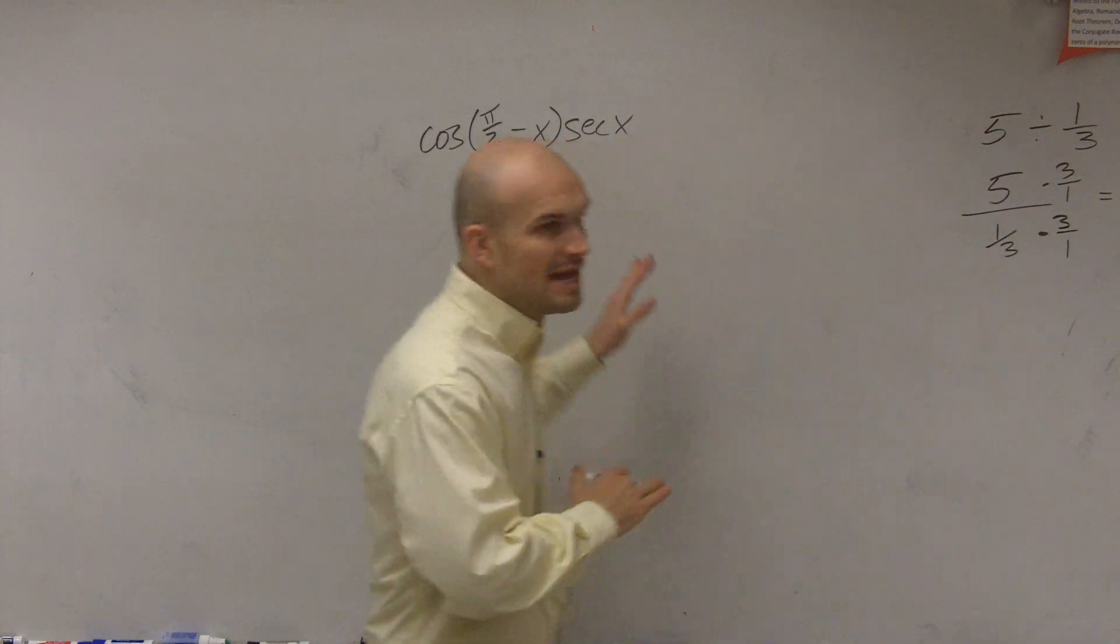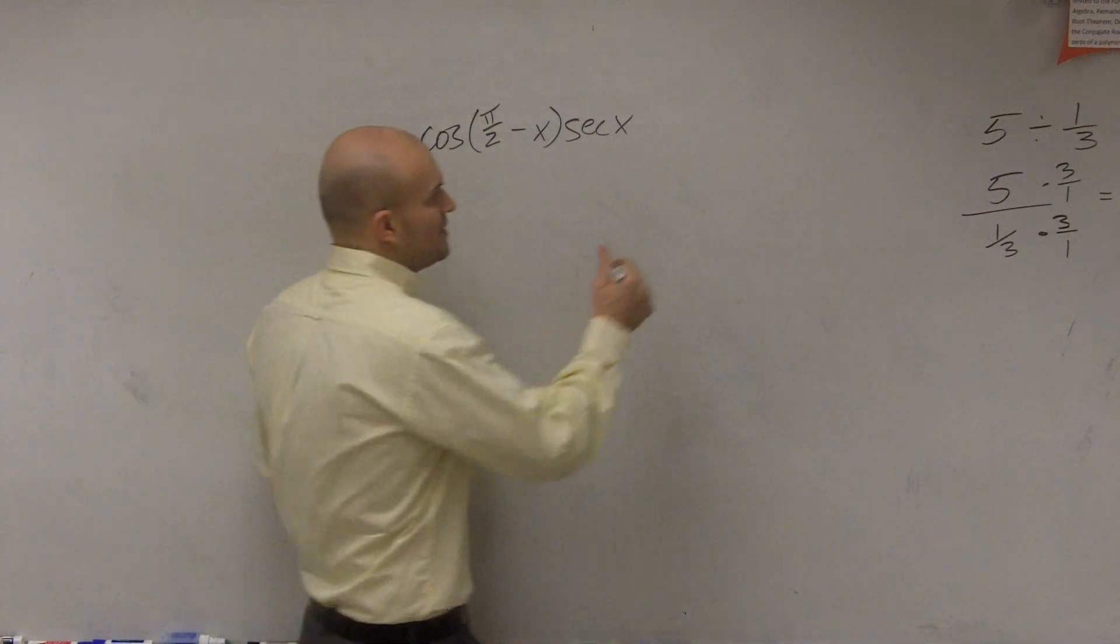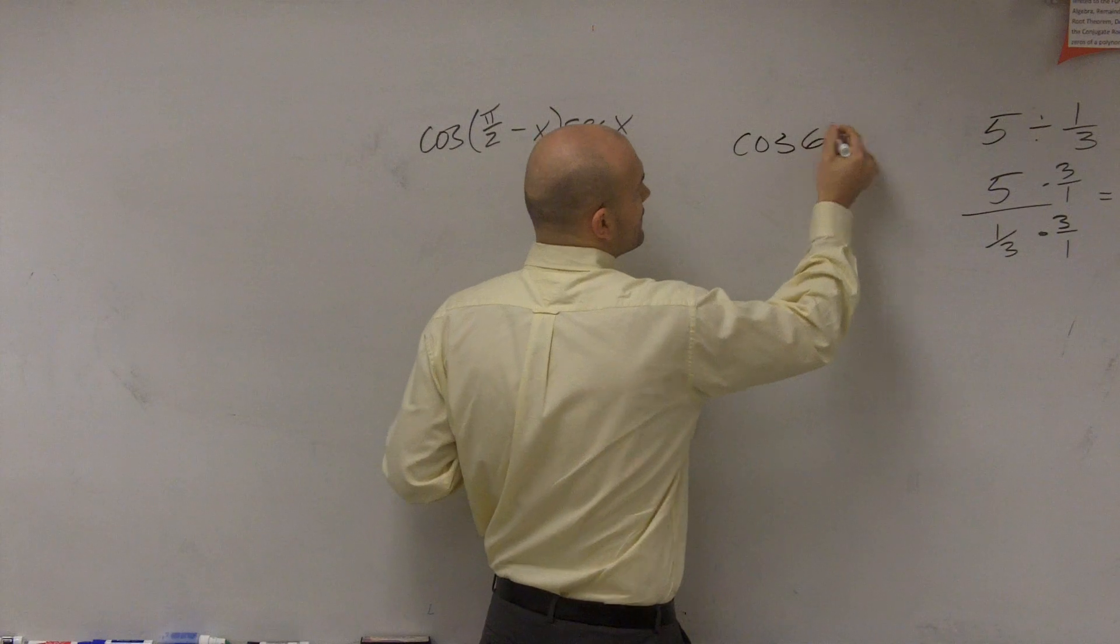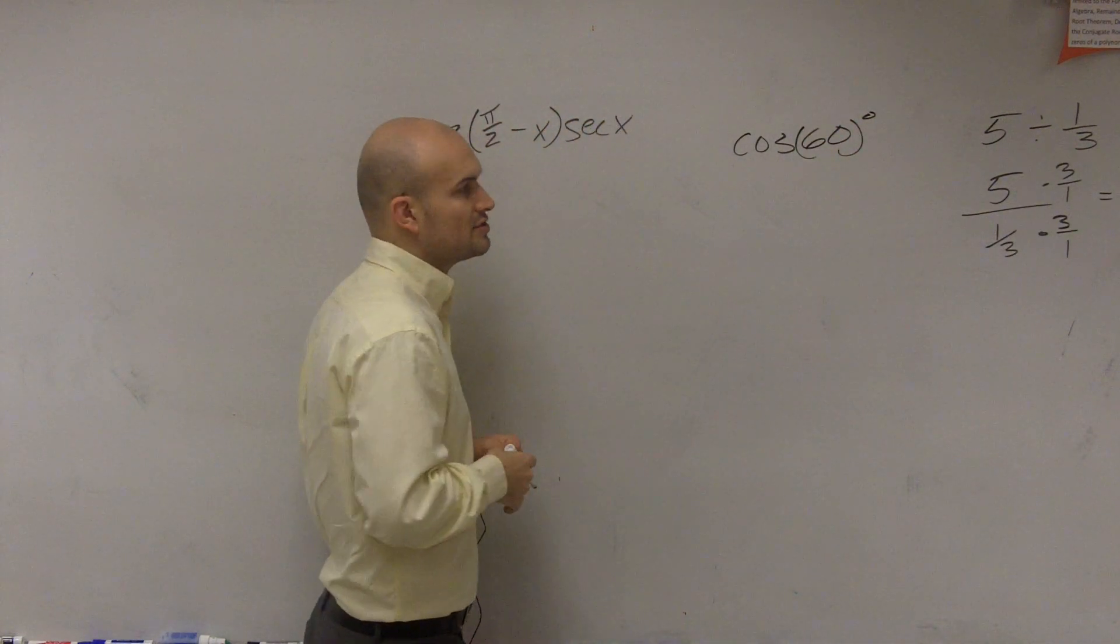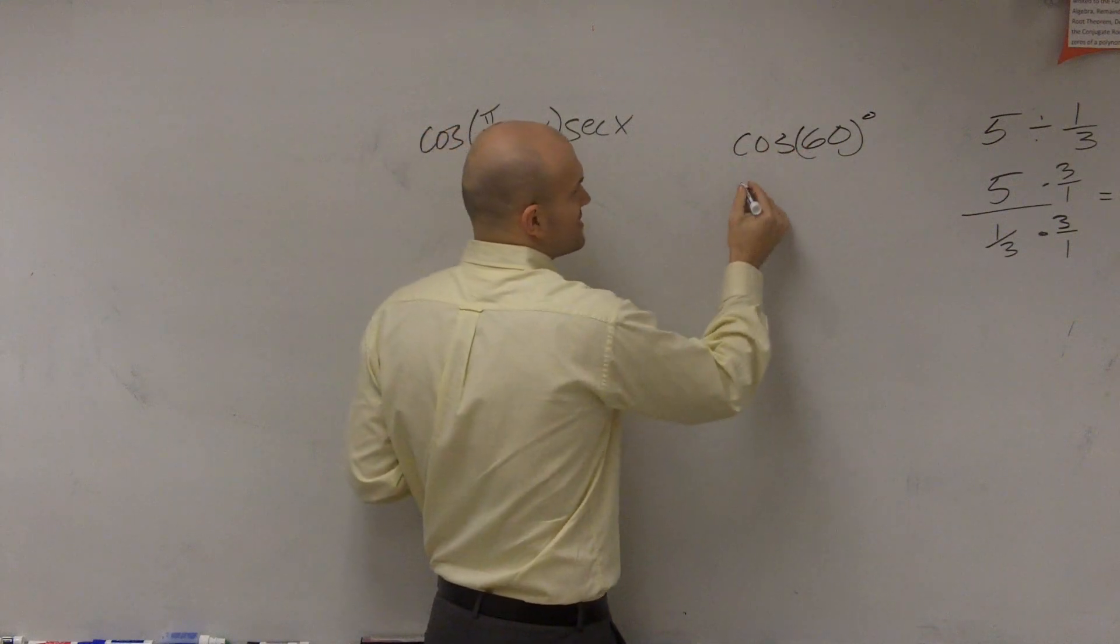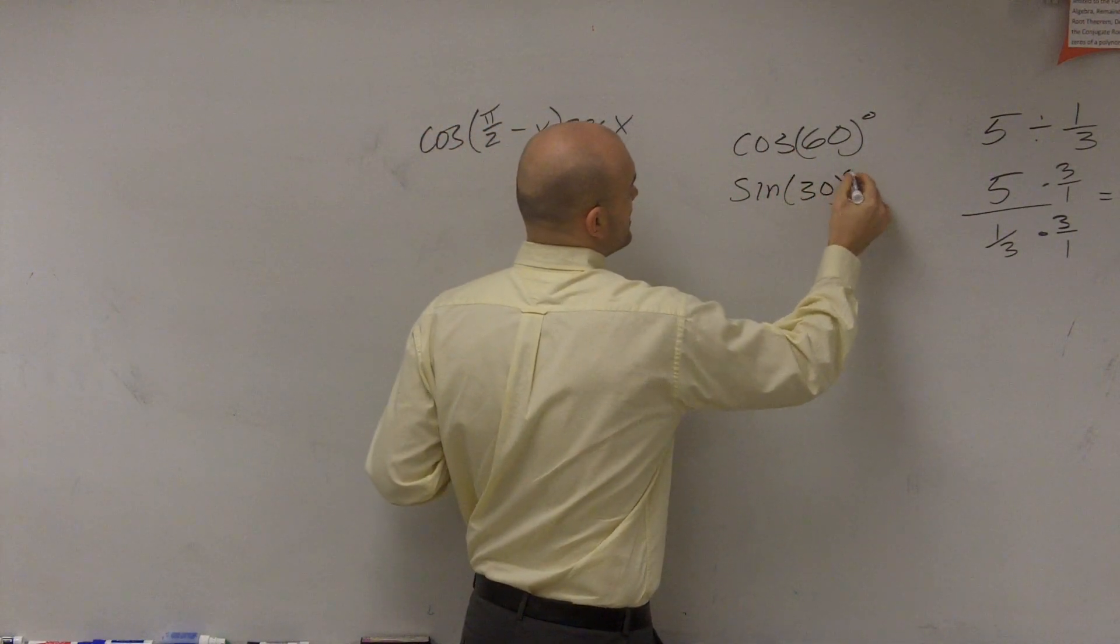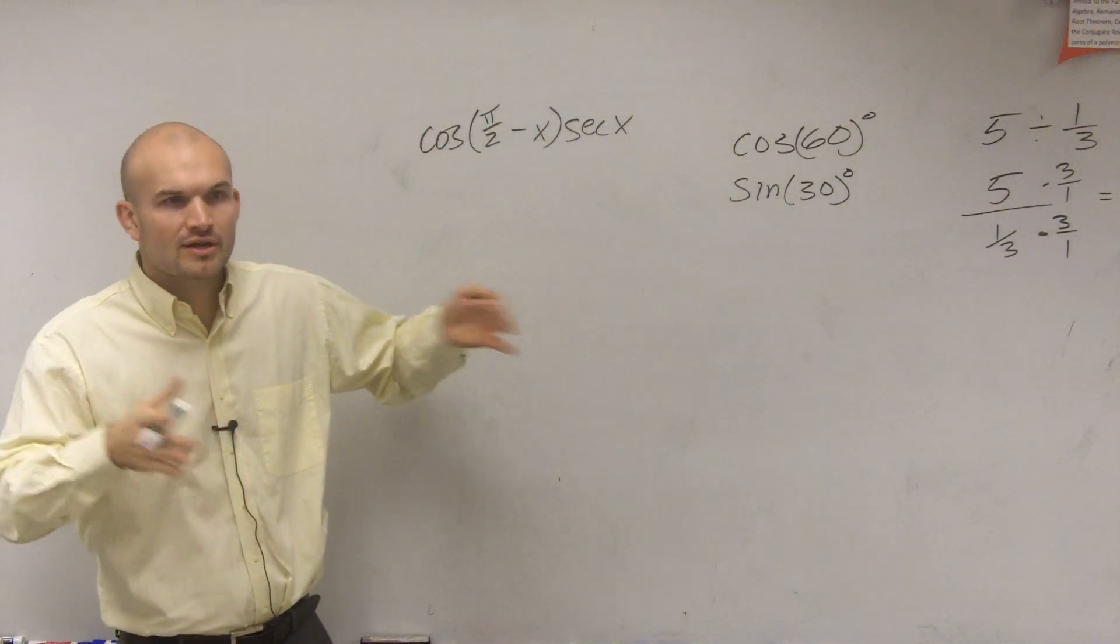If you guys remember, where does this stem from? When we were dealing in section 4.2 on the unit circle, if you guys go back, remember, we determined that the cosine of 60 degrees was equal to the sine of 30 degrees. Those were equal to each other.